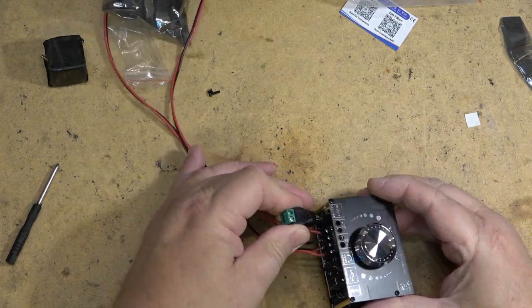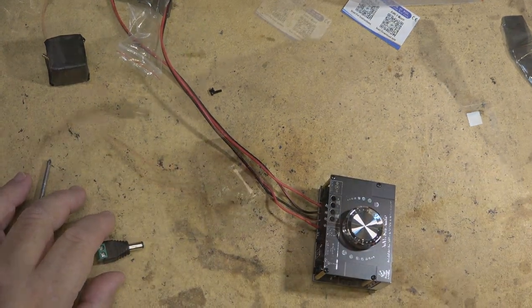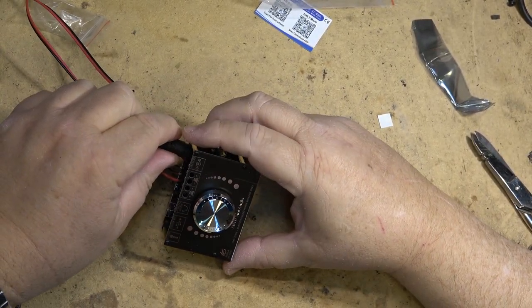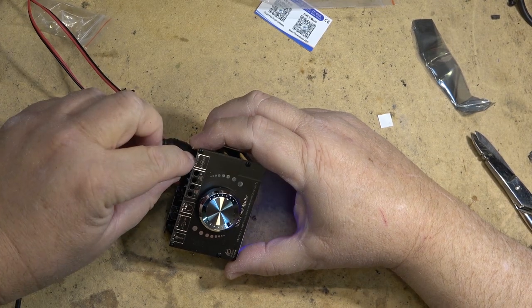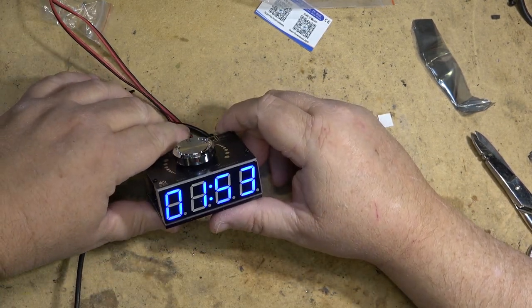It can run up to 24 volts. You can plug any wall wart into this, a 12-volt wall wart should do the job. If I wanted full power I could hook it up to a 24-volt supply, or batteries. I have a standard 12-volt positive tip. There is the clock, nice blue display.